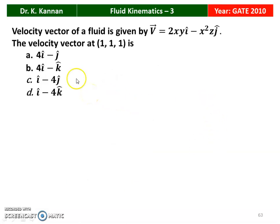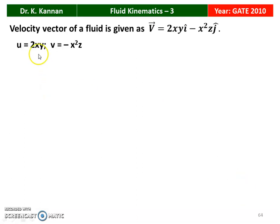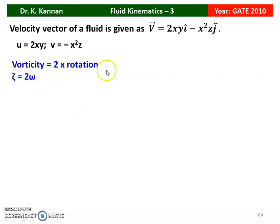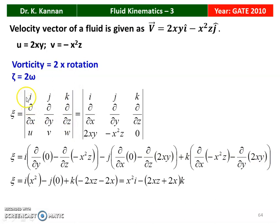The next question from the 2010 question paper: the velocity vector of the fluid is given by V = 2XY·î - X²Z·ĵ. The vorticity at point (1, 1, 1) is to be found. The correct answer is option D: î - 4k̂. The velocity components are U = 2XY, V = -X²Z, and the W component is not given, so W = 0.